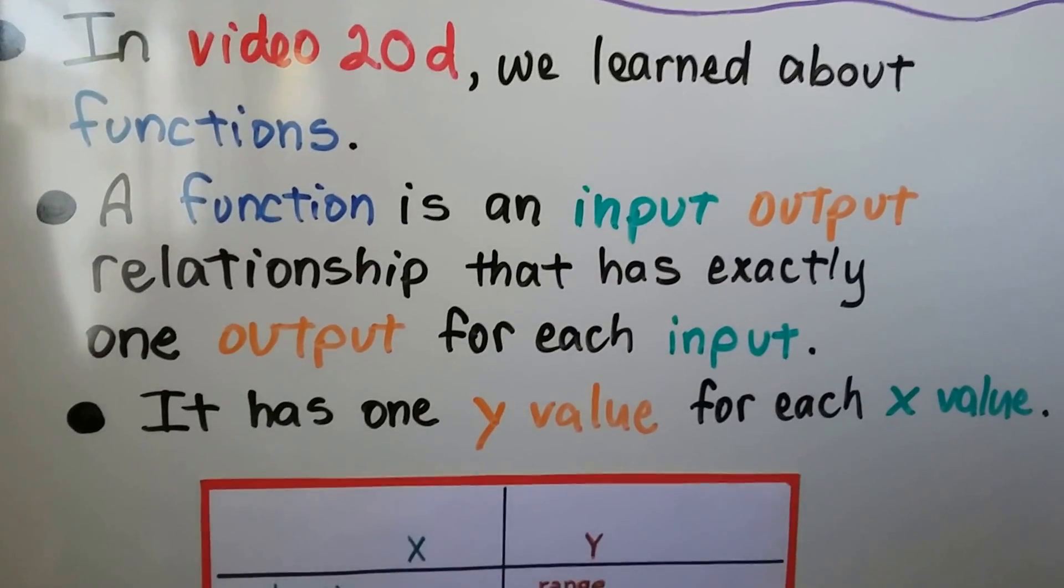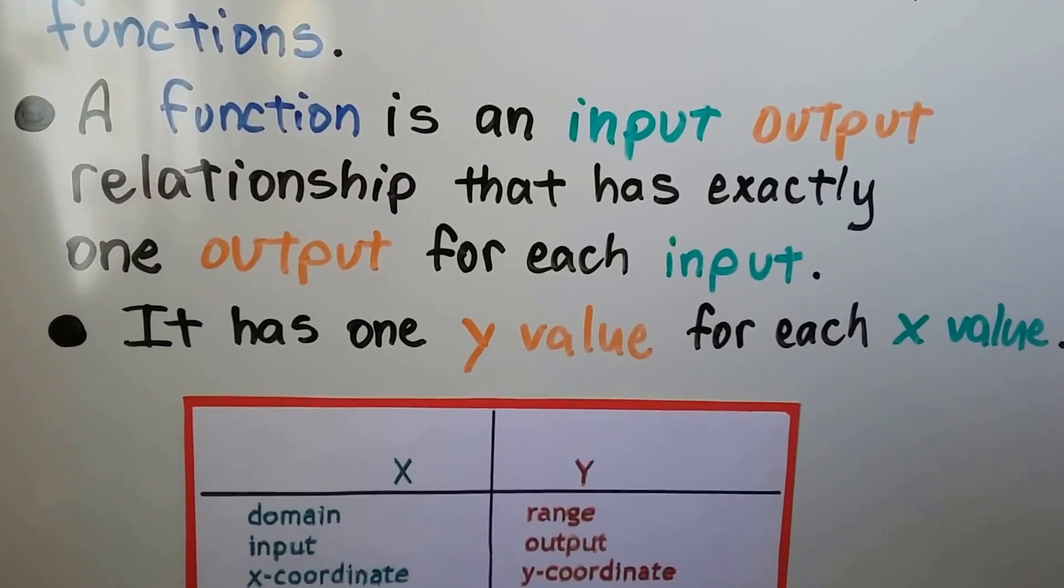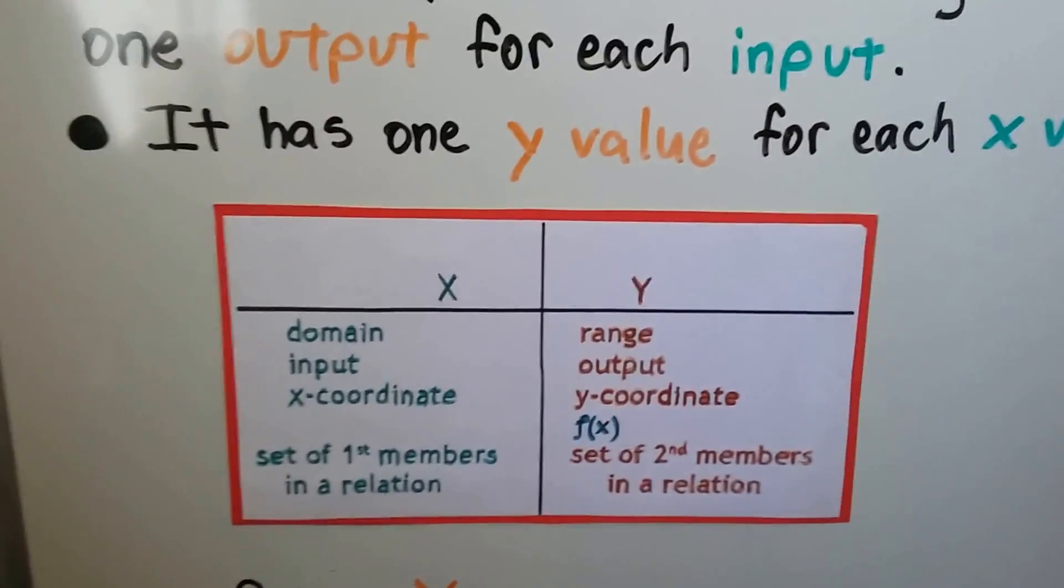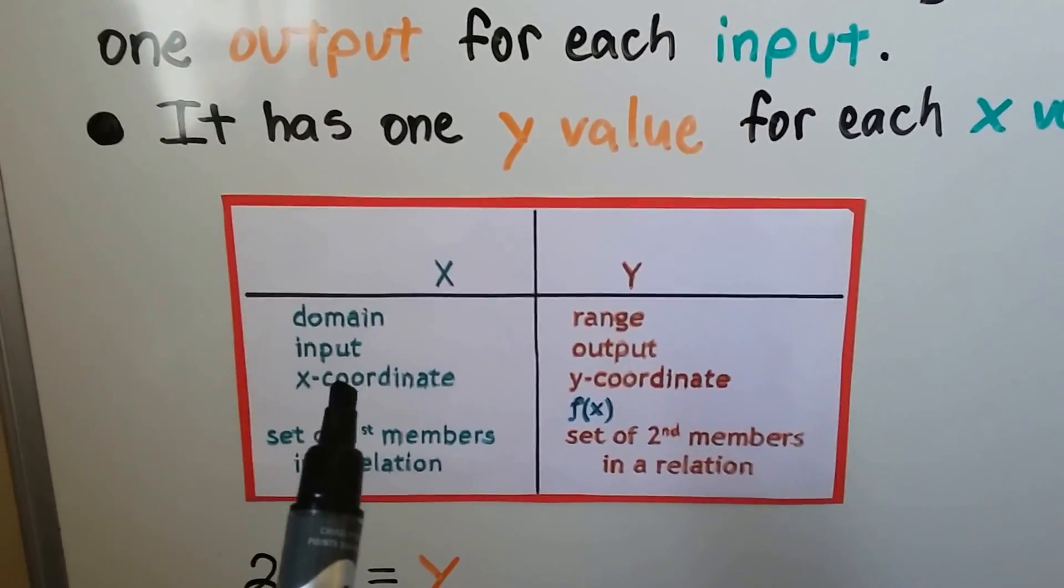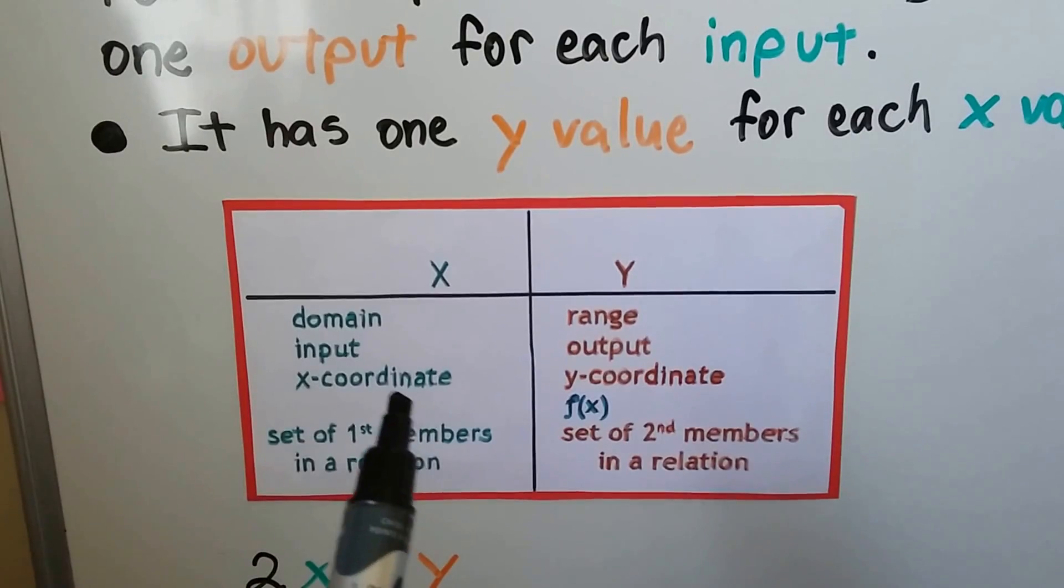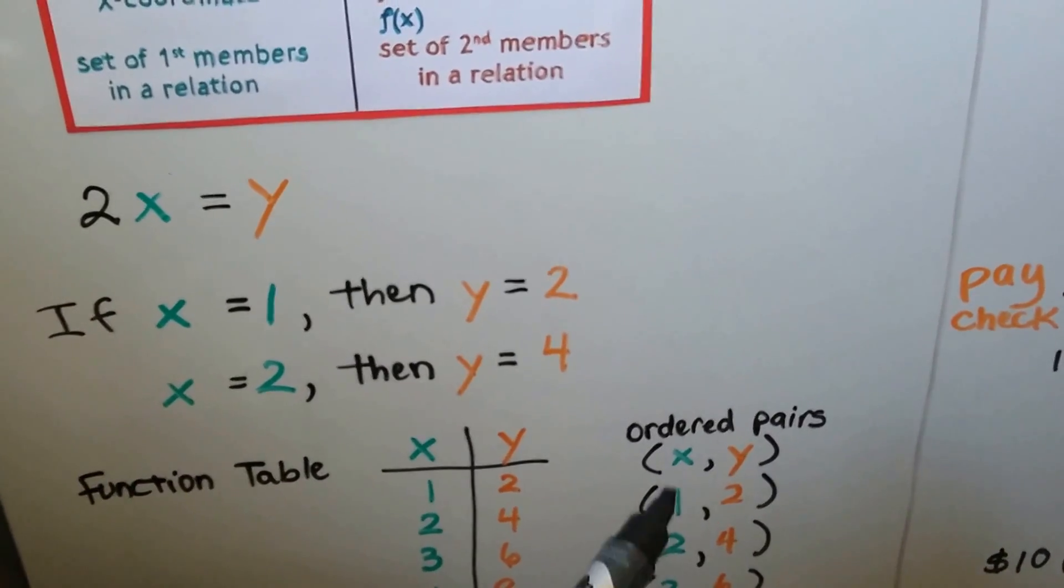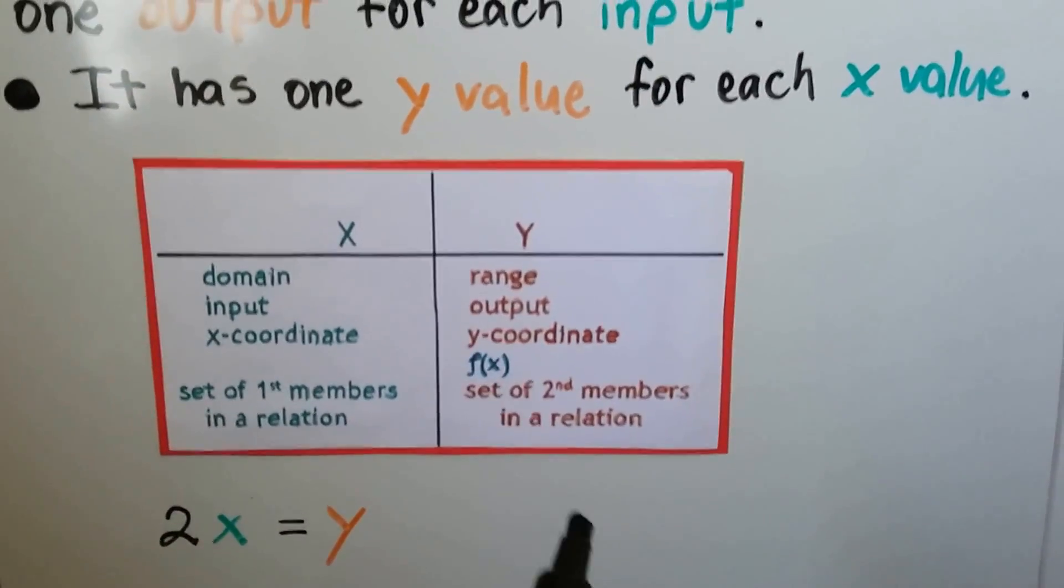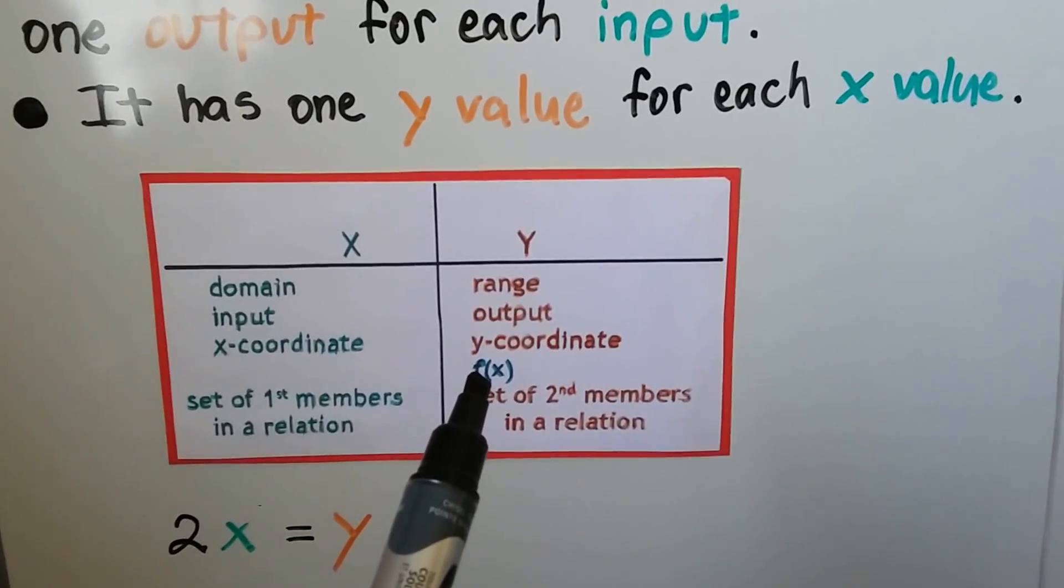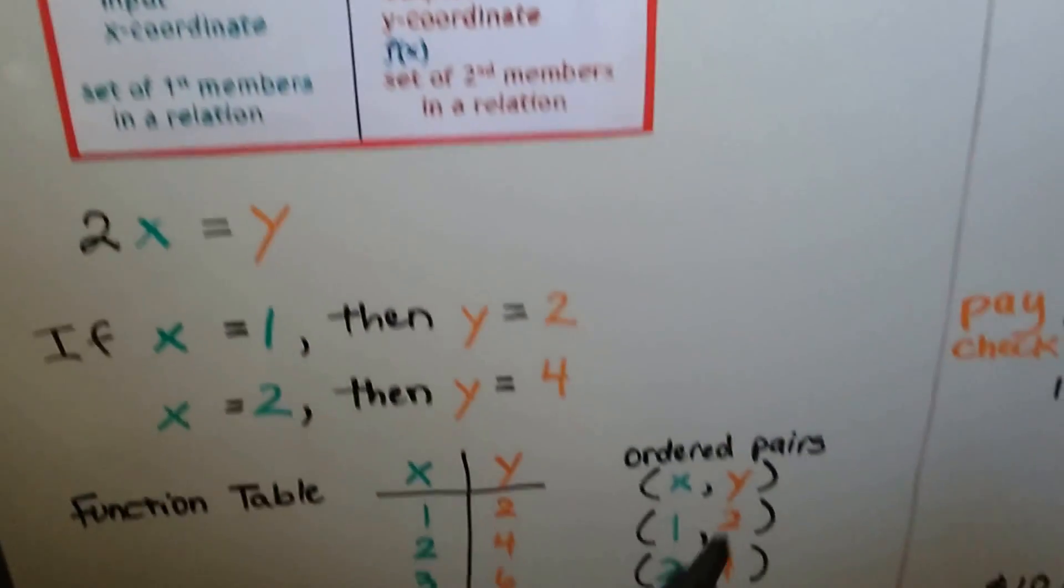In video 20D, we learned about functions. A function is an input-output relationship that has exactly one output for each input. It has one y-value for each x-value. There's different names for x and y. x could be called the domain, the input, the x-coordinate on a coordinate plane, and it's the first members in a relation like ordered pairs. The y can be called the range or the output, the y-coordinate on a coordinate plane. It can also be called the f of x, which means the function of x.